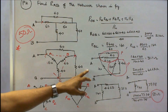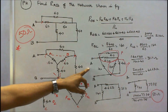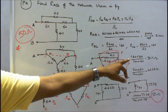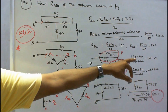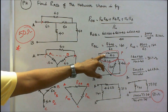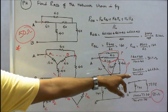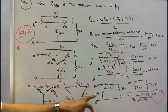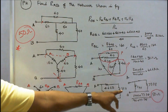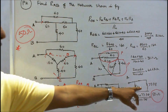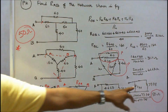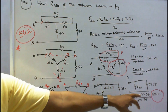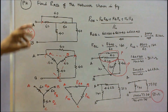Now I redraw the diagram. This is the third stage: 210, 140, and 140 ohms. The 140 and 40 are in parallel: 140 × 40 / (140 + 40) = 31.11 ohms. The 210 and 60 are in parallel: 210 × 60 / (210 + 60) = 46.67 ohms. In the fourth stage, 46.67 and 31.11 are in series = 77.78 ohms. This is in parallel with 140: 140 × 77.78 / (140 + 77.78) = 50 ohms. The resistance across AB is equal to 50 ohms.